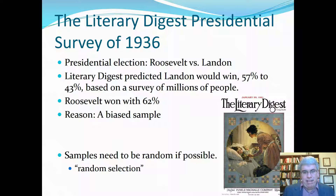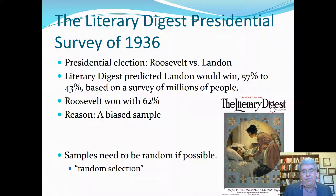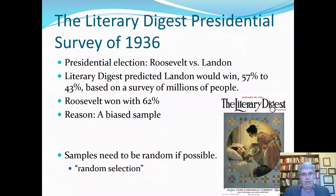It was the number one magazine, and they got the idea to put a postcard in the magazine that people could send back indicating who they would vote for. They got millions of people to respond, and they thought that with such a large sample, they'd know for sure who won. They predicted that Landon would win 57% to 43% based on a survey of millions of people.